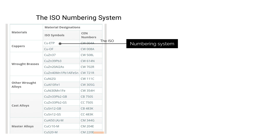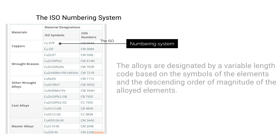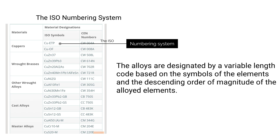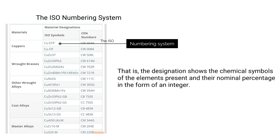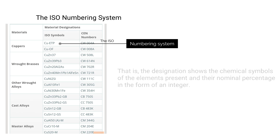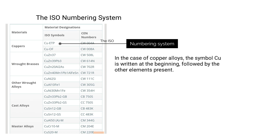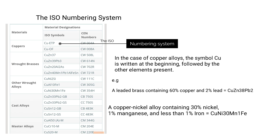The International Organization for Standardization (ISO) designation: Alloys are designated by a variable length code based on the symbols of the elements in descending order of magnitude. The designation shows the chemical symbols of the elements present and their nominal percentage as an integer. For copper alloys, the symbol CU is written at the beginning, followed by the other elements present. For example, a leaded brass containing 60% copper and 2% lead is designated as CuZn38Pb2. A copper-nickel alloy containing 30% nickel, 1% manganese, and less than 1% iron is designated CuNi30Mn1Fe.